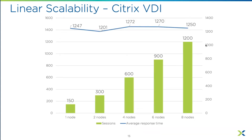A second proof point used Login VSI for Citrix users on Nutanix, running 150 users per node from one node up to eight nodes — 1,200 users total. The test shows linear scaling of users as nodes are added. More importantly, the response time metric — representing what users actually see — was nearly flat: 1,247ms at one node with 150 users, and just 1,250ms at eight nodes with 1,200 users. That three-point difference demonstrates how locality enables linear user experience scaling.